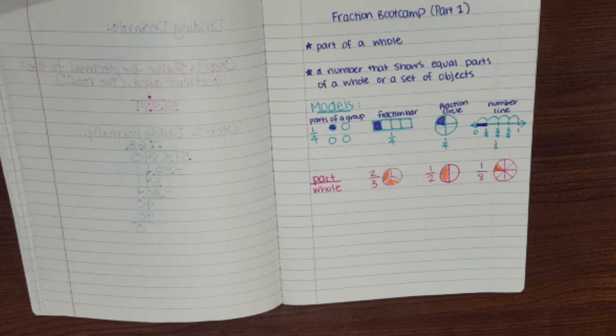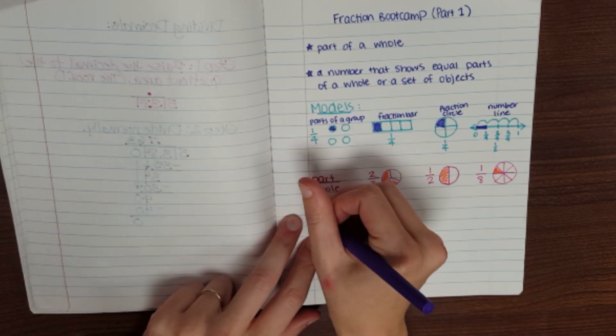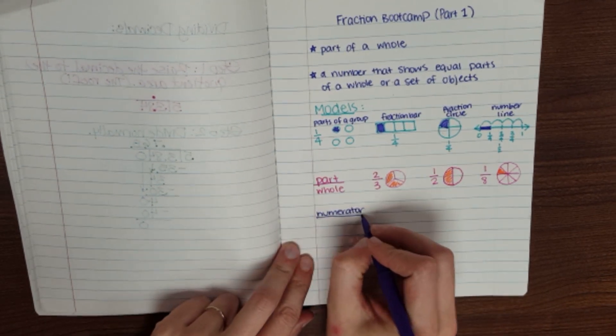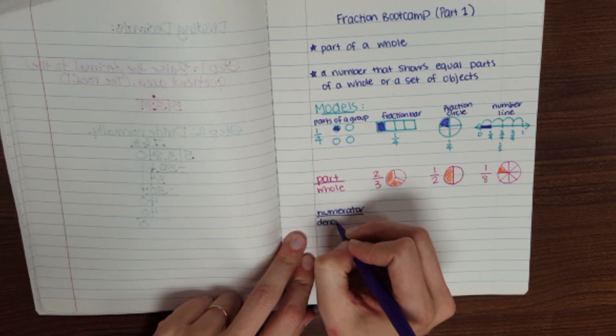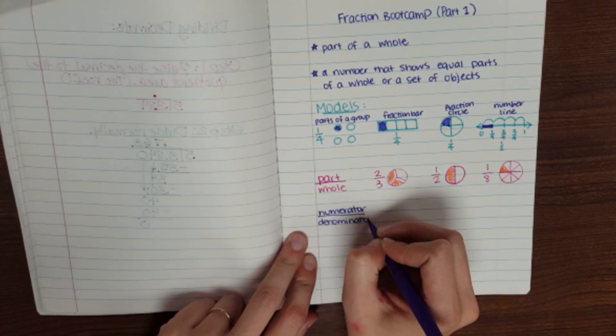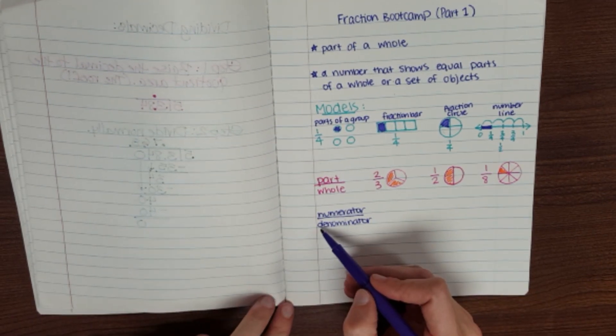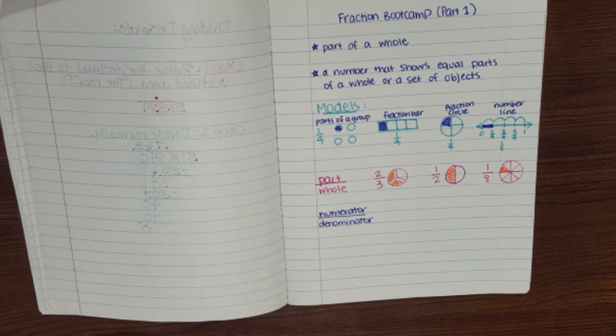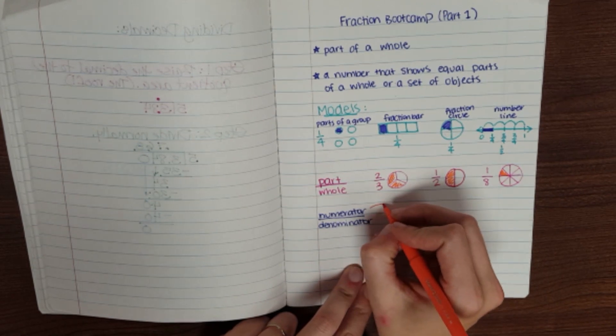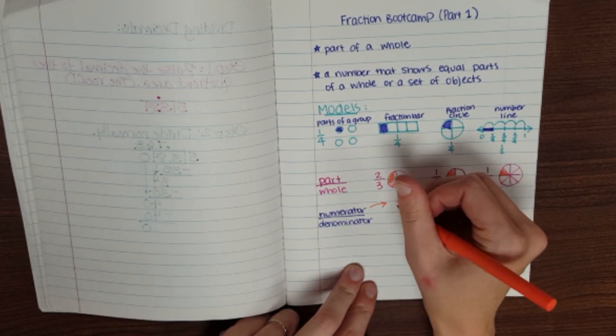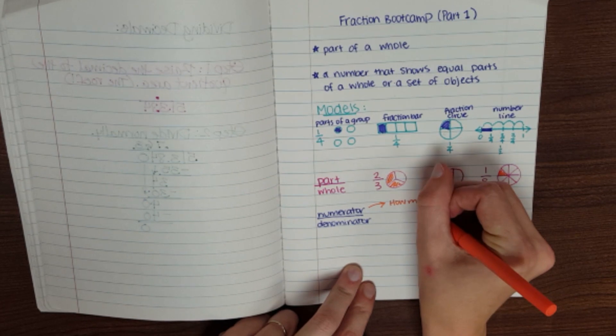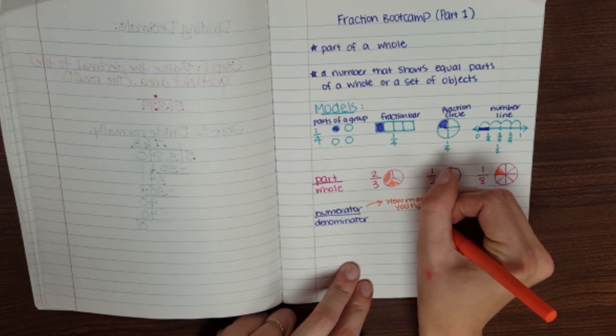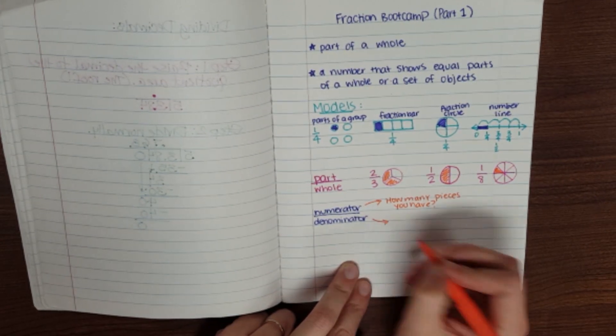The vocabulary words for you to remember on this one are going to be numerator and denominator. Your elementary teacher probably had you remember those by denominator, having a D like down. That's the one on the bottom. The numerator is the other one, the one on top. The numerator tells you how many pieces do you have. And denominator tells you how many pieces are in the whole.